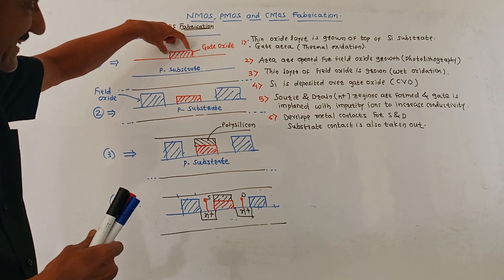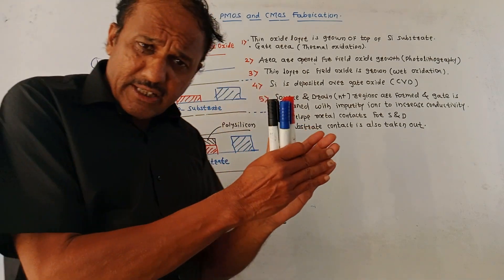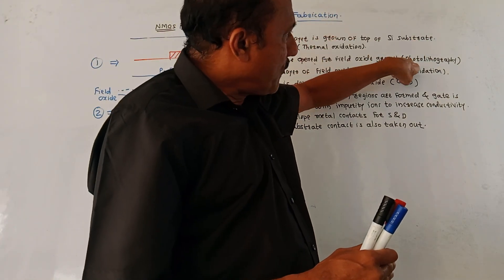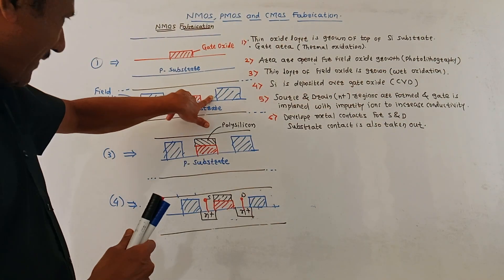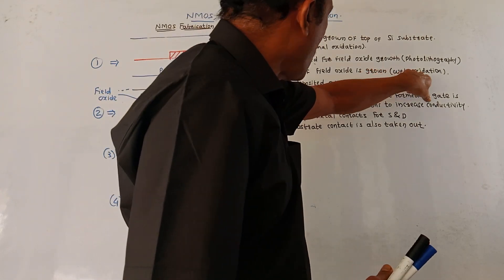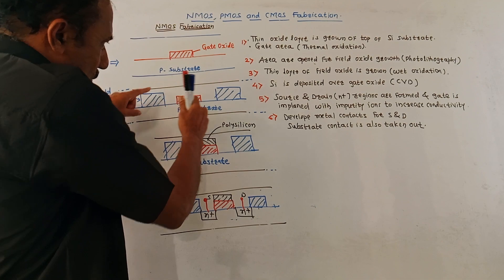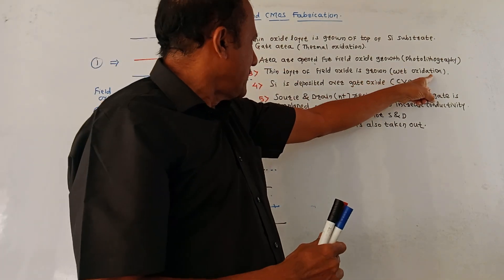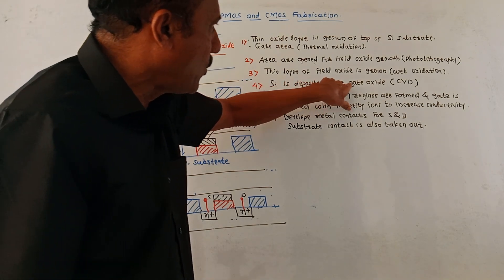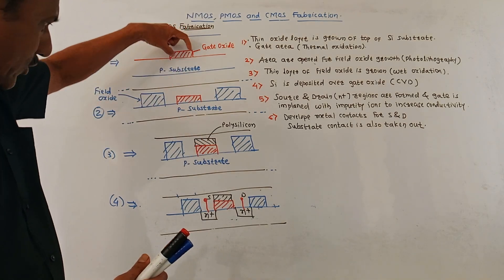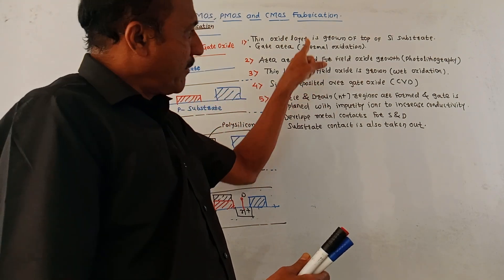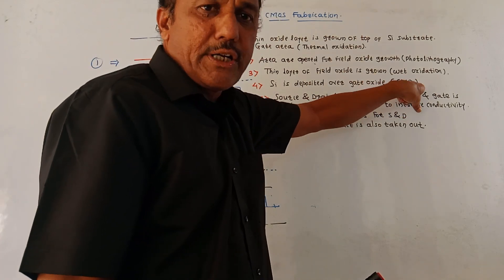Then certain areas are opened for the field oxide growth. To open these areas, the photolithography technique is used. A thin layer of field oxide is then grown using the wet oxidation technique. Next, a polysilicon layer is formed — silicon is deposited over the gate oxide. For this deposition, the CVD method, that is chemical vapor deposition technique, is used.